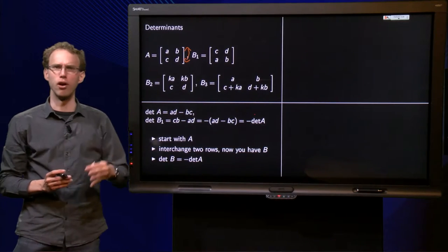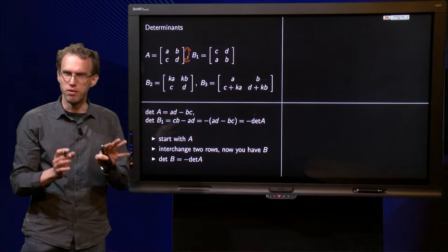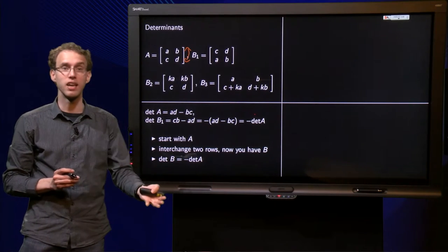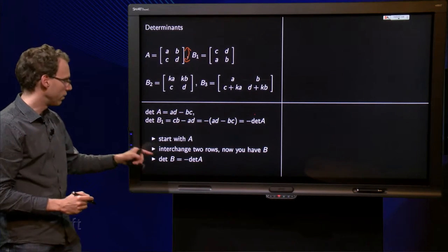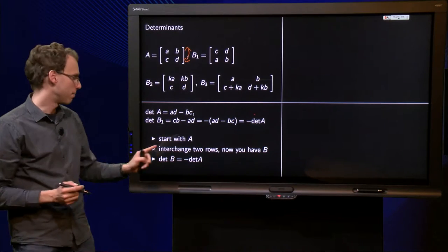Be careful with the order over here. Usually it will be fine, but in one of the other ones, the order in which you perform this is important. So you start with A, interchange rows, you get B, then you get the determinant of B by multiplying the determinant of A by minus one.